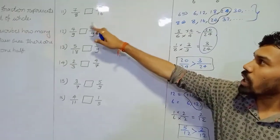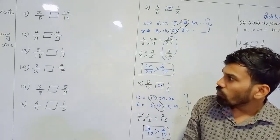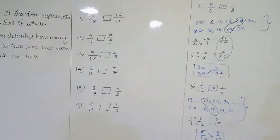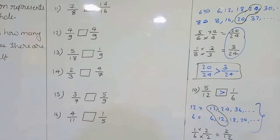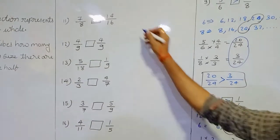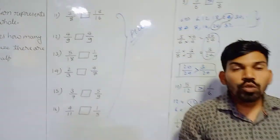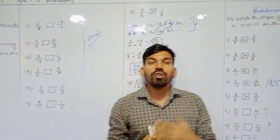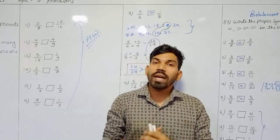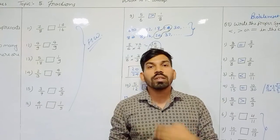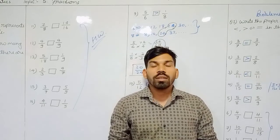So this way: first convert the unlike fractions into like fractions, then decide which is greater and which is smaller according to the numerator. On the same basis, you have homework problems: numbers 11 onwards — 7 upon 8 and 14 upon 16; 4 upon 9 and 4 upon 9; 5 upon 18 and 1 upon 9; 2 upon 3 and 4 upon 7; 3 upon 7 and 5 upon 9; 4 upon 11 and 1 upon 5. Complete this homework, ask questions in your group if you have difficulties, and submit it. The next concept will continue in the next video. Thank you so much.